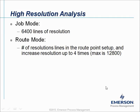You can collect high resolution data in the job mode or in the root mode. If you collect data in the job mode, the data will always be measured with 6400 lines of resolution. In the root mode it's a little bit different — the software will look into the point definition setup, take the number of resolution lines from your point setup, and increase them up to 4 times, with a maximum of 12800.